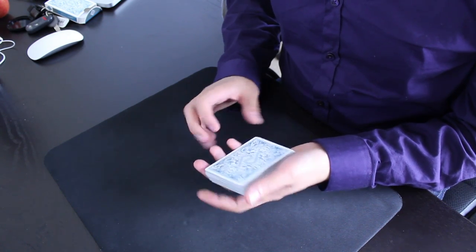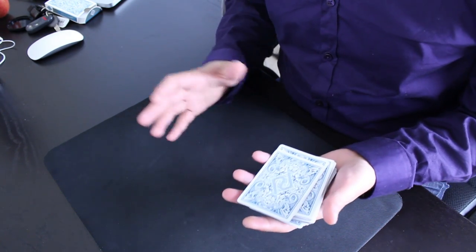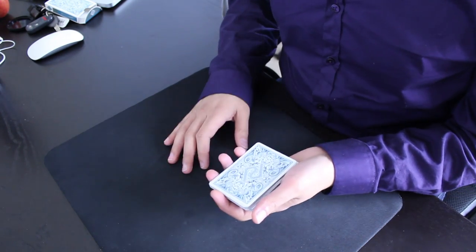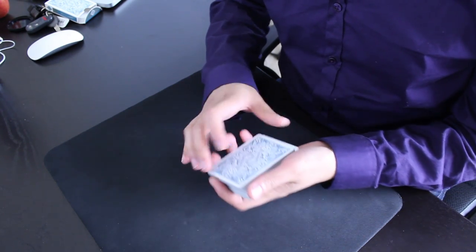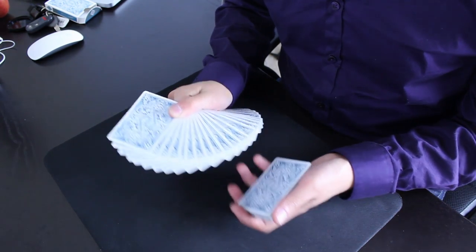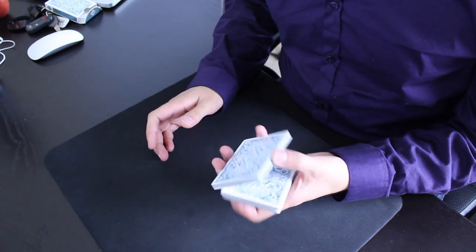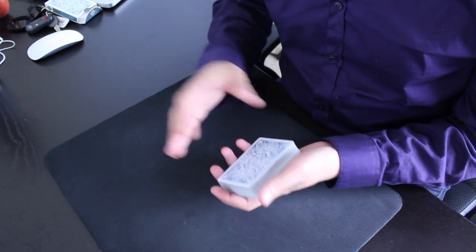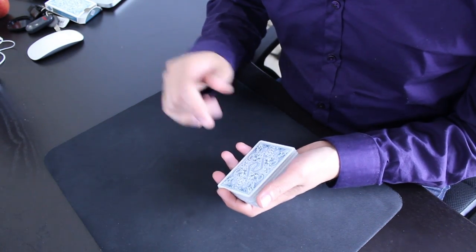Alright, so it combines a few different moves that I've already taught into one sequence. So to do this you need to know how to do a swing cut, you need to know a one-handed fan, and you need to know a charlier cut. I've made tutorials on all these moves, I'll put links to them up on the screen and in the description box down below.